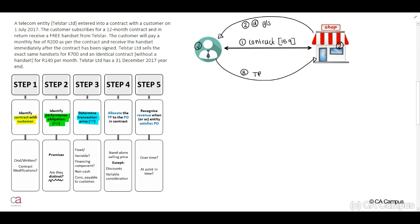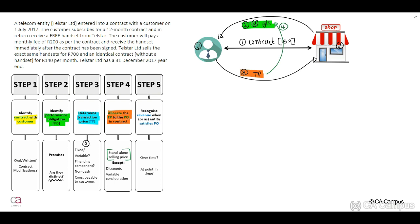There are four important aspects that we will look at during our lecture. Step four, we need to allocate the transaction price to the performance obligation in the contract. This will be our transaction price that we will have to allocate to our performance obligation, and this will be based on our standalone selling price. Remember, your standalone selling price will comply with our IFRS 13 fair value measurement principles. It has to be a price in an observable market with similar terms and conditions under similar circumstances.